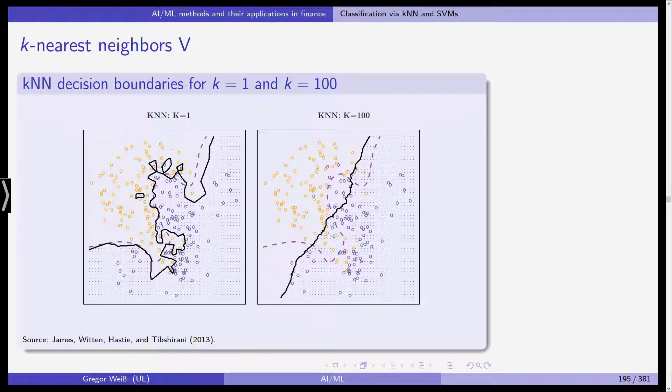Same picture, but now for k equal to 1 and k equal to 100. And you can see what happens with k equal to 1. It gets even more wiggly here. And with k equal to 100, it's very coarse, even a linear decision boundary. And again, you can see here the bias variance tradeoff in play. And k is obviously a hyperparameter that needs to be chosen before applying the algorithm, usually via cross-validation, to arrive at an optimal algorithm.